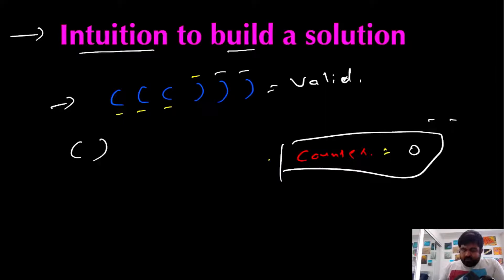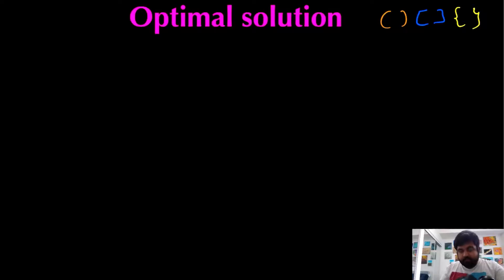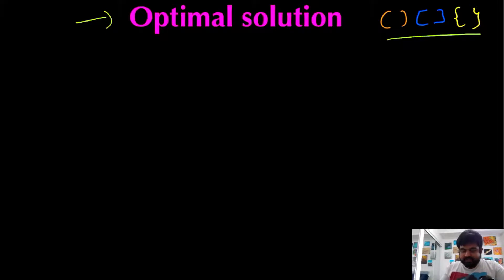This works for one kind of bracket, but in our original problem there are three different kinds of opening and closing brackets and we have to keep track of them. Also, we need to track the order in which they were opened and closed — that order must be maintained. So it's not as simple as creating three different counters; we also have to track the order they were opened and closed in.